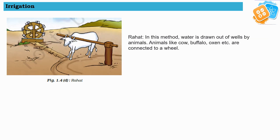The next irrigation system is Rahat. In this method, water is drawn from the well by animals. Animals like cows, buffaloes, and oxen are connected to a wheel. As they move around, the buckets get filled with water and the entire crop is watered.